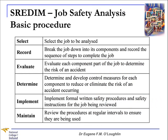The basic procedure for a job safety analysis following the SREDM process is: first, we Select the job to be analysed. Then we Record by breaking the job down into its components or steps and record the sequence of steps to complete the job. Third, we Evaluate each component part of the job to determine the risk of an accident. Fourth, we Determine and develop control measures for each component to reduce or eliminate the risk of an accident occurring. In implementation, we Implement a formal written safety procedure and safety instructions. And finally, in the Maintain stage, we review the procedures at regular intervals to ensure they are actually being used.